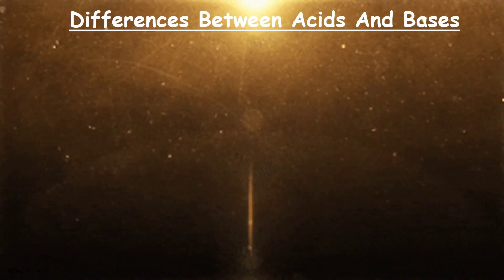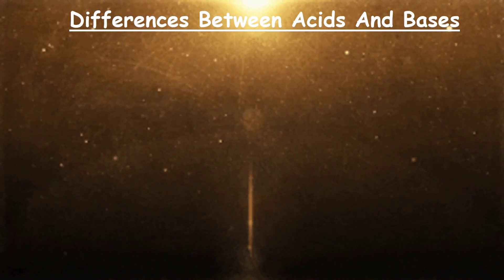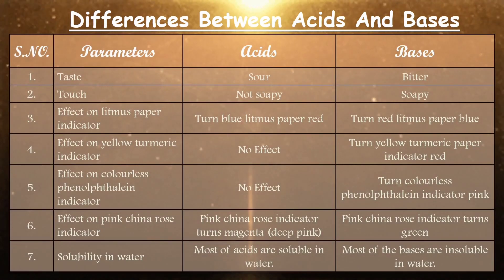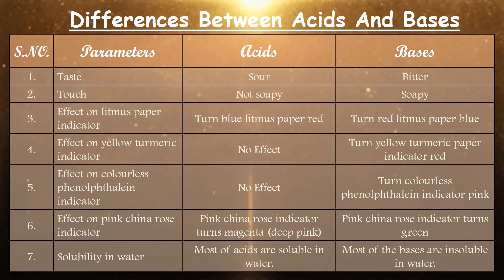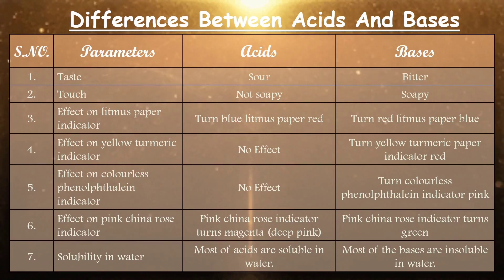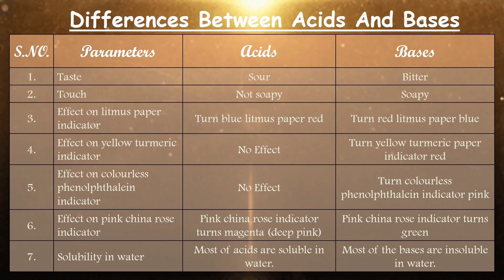For the health properties of acids and bases, there are certain parameters on which we differentiate between acids and bases. Number one: taste. Acids taste sour, while bases taste bitter.